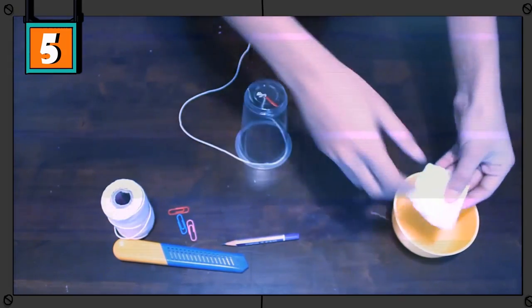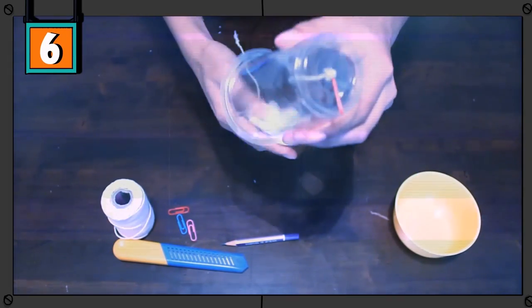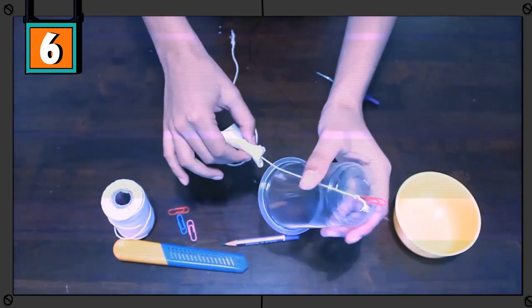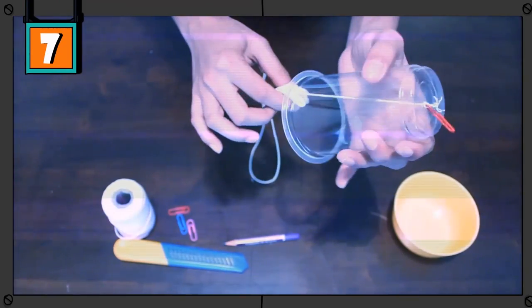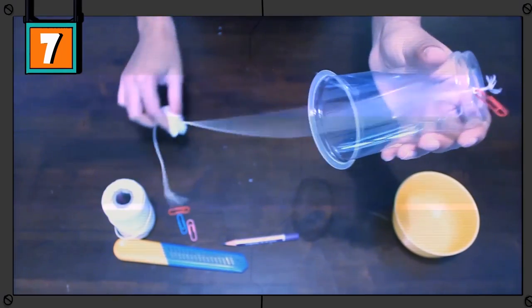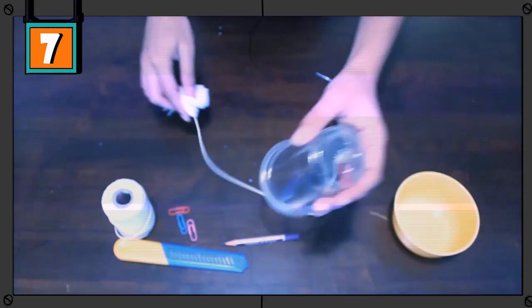Take a paper towel and make it wet. Hold the cup firmly and wrap the wet paper towel around the string near the cup. Squeeze the string with the paper towel tightly and pull down in short jerks. Bingo, it works!